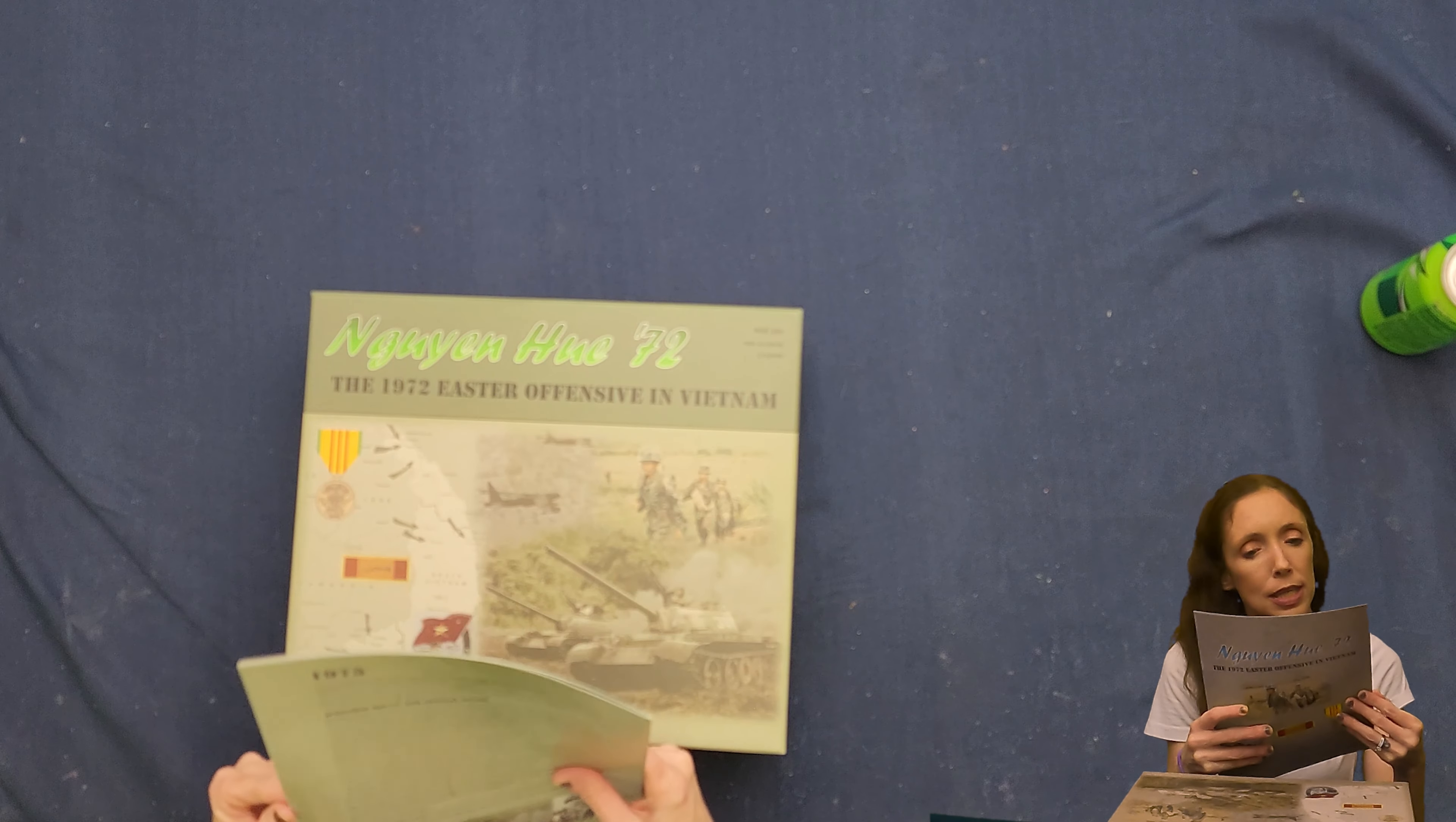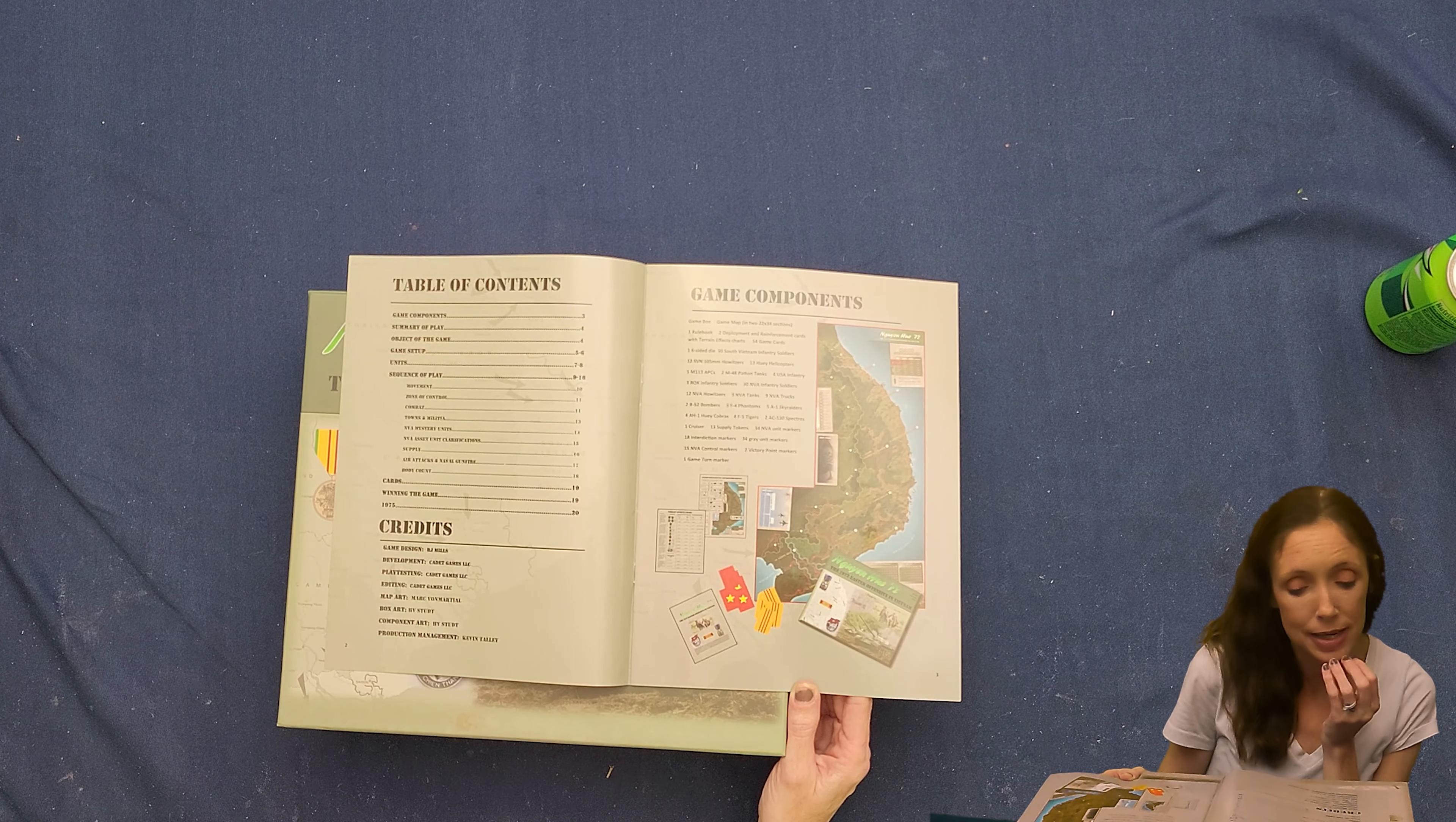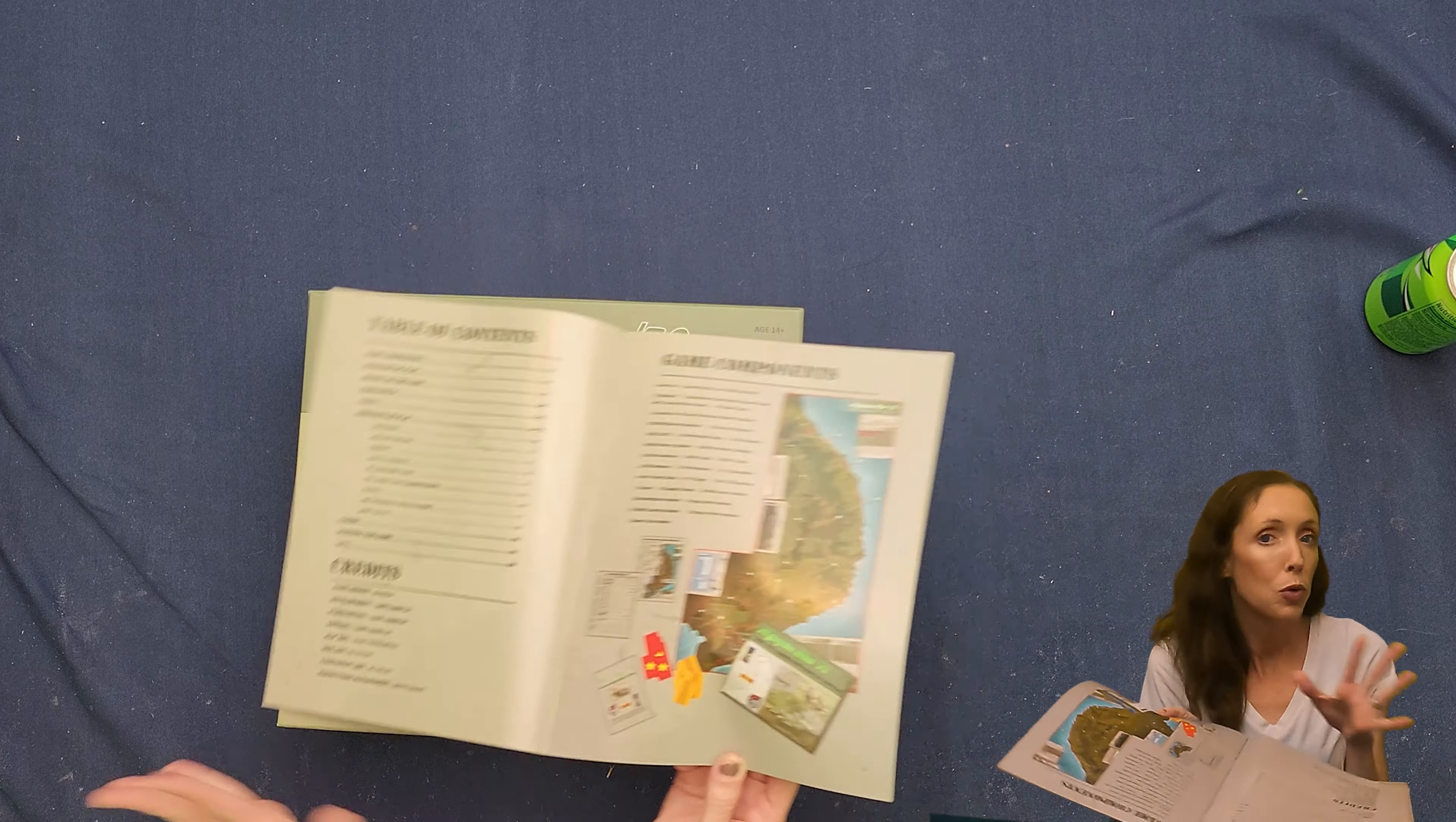If it is, then I'm sure he'll tell you all about it when he plays the game, but it does say cadet games. And I was looking to see if there was anything in here like about them, but it just says credits go to the game design is RJ Mills, development is cadet games. The play testing is cadet games. Editing is cadet games. Map art is Mark Vaughn Marshall. Box art is HB Stutt. Component art is HB Stutt and production management is Kevin Talley.